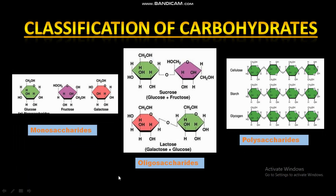Monosaccharides and oligosaccharides are sweet in taste, crystalline in character, and soluble in water; hence they are called sugars. Monosaccharides contain a single unit of sugar, therefore they are referred to as simple sugars. Examples of monosaccharides are fructose and galactose.